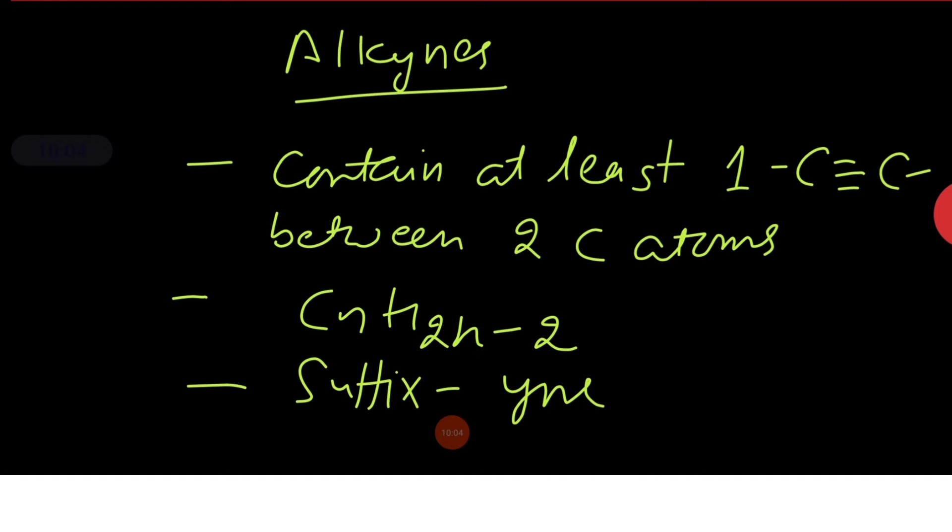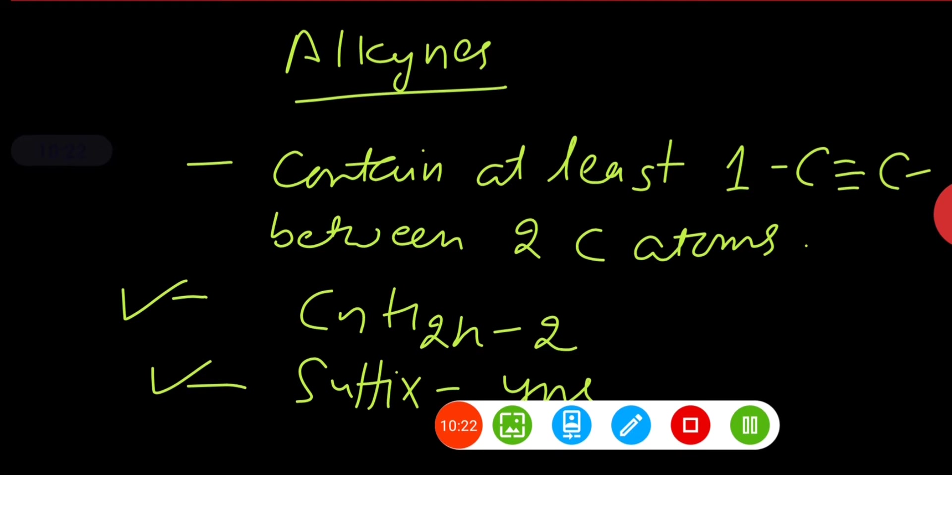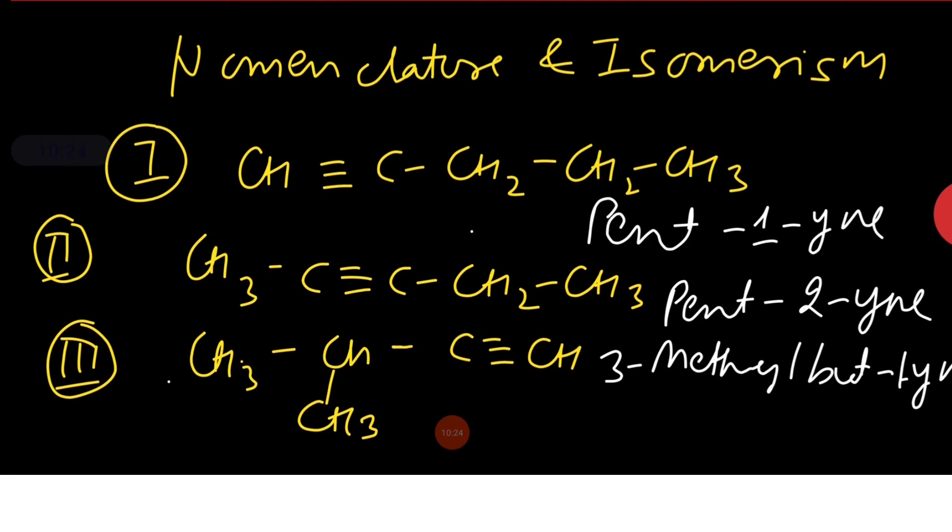Now let us discuss about alkynes. Alkynes contain at least one carbon-carbon triple bond between two carbon atoms. Their general formula is CnH2n-2 and suffix -yne is used to the word root during nomenclature. So here are some examples.